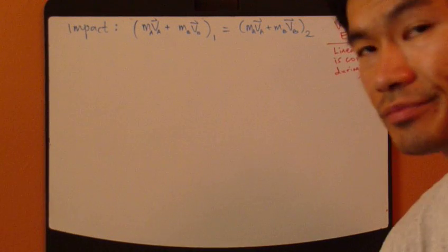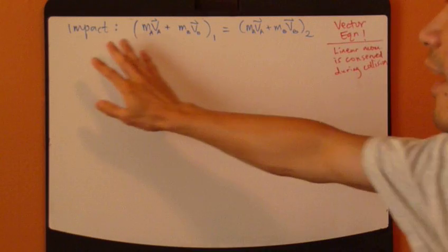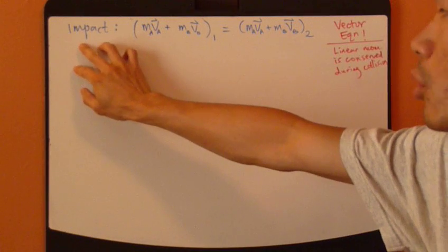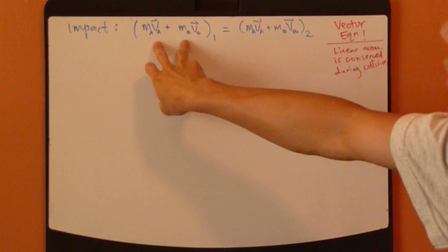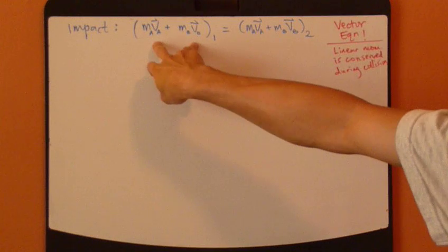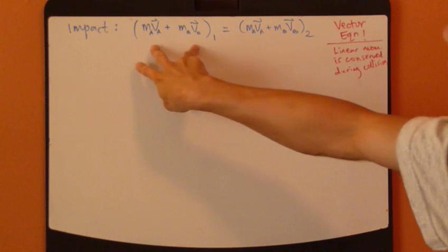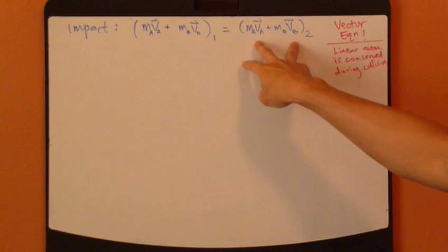Before we get into examples, let's recap the impact equation, where the sum of all the linear momentum before equals the sum of the linear momentum after.